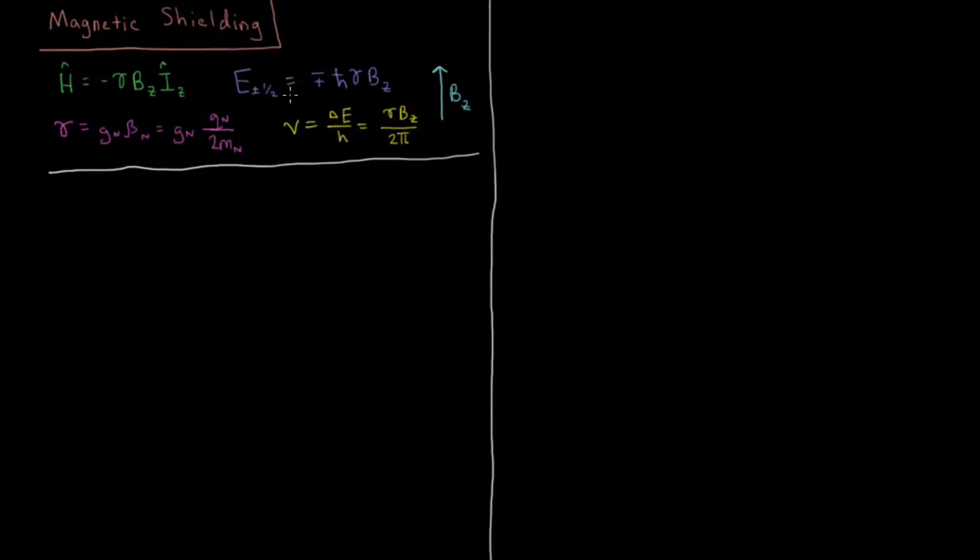For these energy levels to transition from the low energy level to the high energy level you need to absorb a photon which is the energy change divided by Planck's constant. And that is equal to gamma times the magnetic field divided by two pi to get a frequency nu in Hertz.